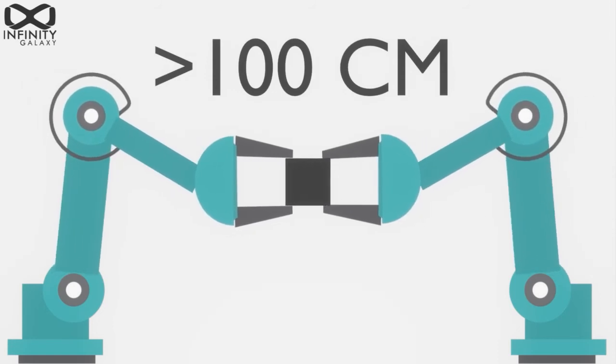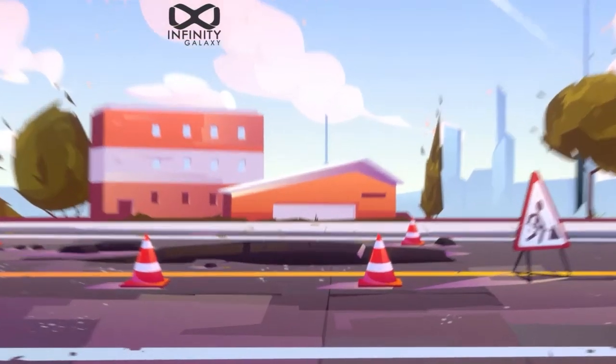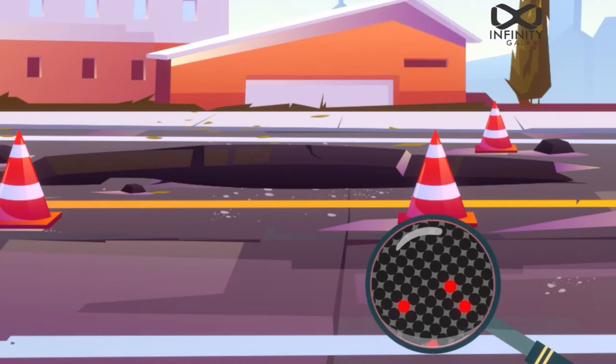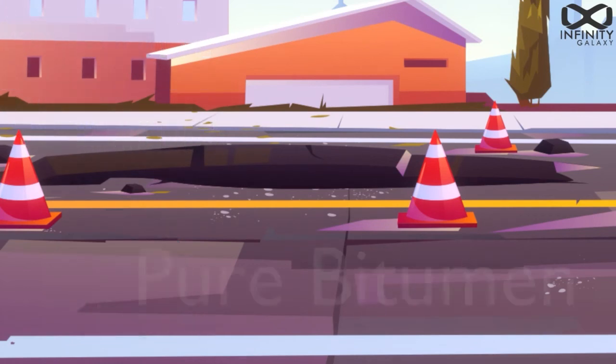Specific gravity determines the density of the bitumen. It shows the relation between the weight and volume of bitumen and determines the purity of bitumen. The specific gravity of pure bitumen ranges from 0.97 to 1.02.